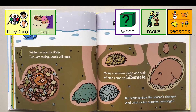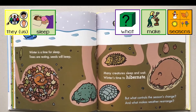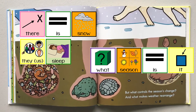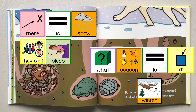Many creatures sleep and wait. Winter's time to hibernate. But what controls the seasons' change? And what makes weather rearrange? There is snow. They sleep. What season is it? Winter.